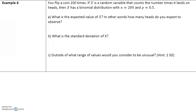Here's another example: you flip a coin 200 times. If x is a random variable that counts the number of times it lands on heads, then x is a binomial distribution with n equals 200, because we flip the coin 200 times, and p equals 0.5, because the probability that it'll land on heads is 0.5. Part a: what is the expected value of x? The expected value of x equals n times p, where n is 200 and p is 0.5.